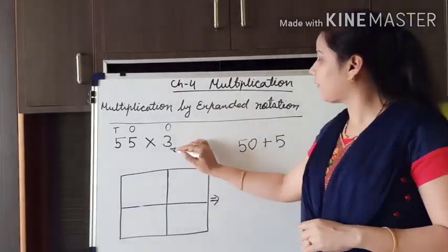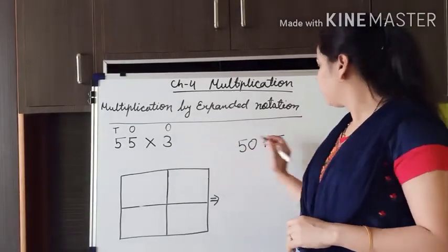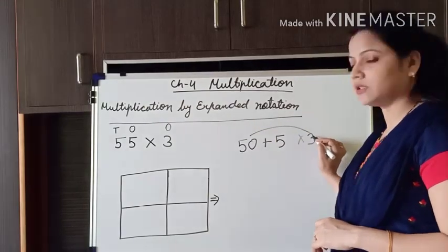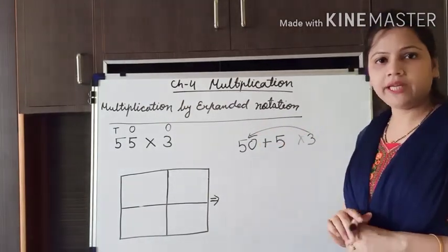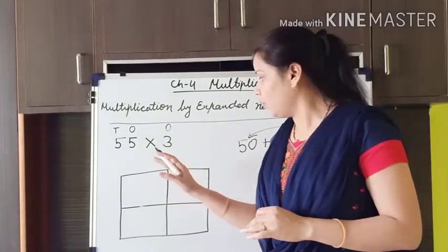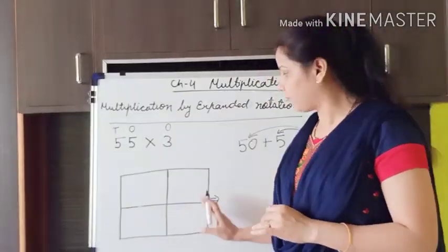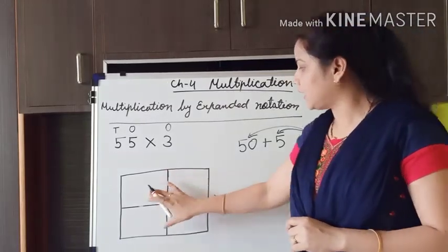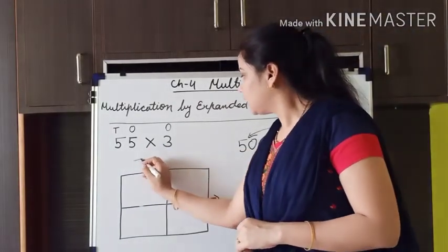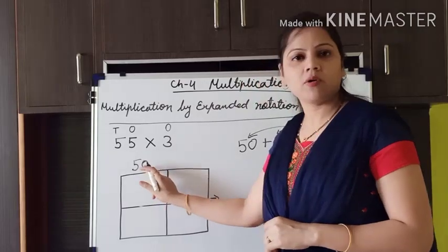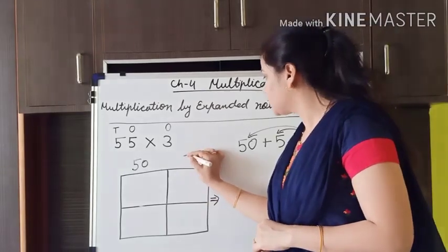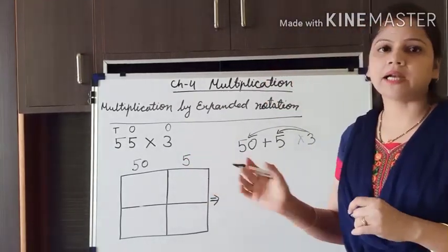After breaking the number, we have to multiply this number by this number. To do that multiplication we have to make a table — like this, with 4 squares. First I am just going to write 50 plus 5 on top. Above this box I am writing the first number, that is 50, and above this box I am writing the other number, that is 5.